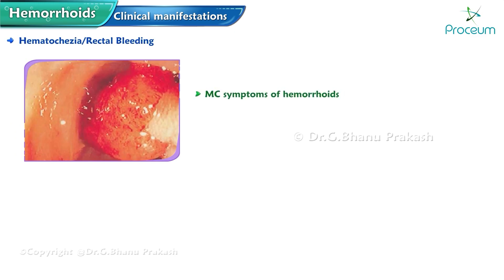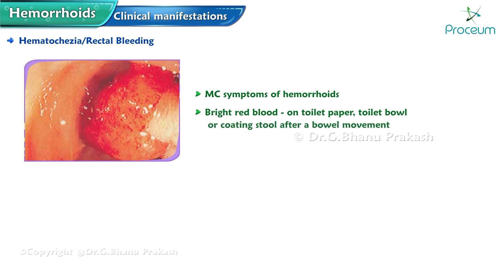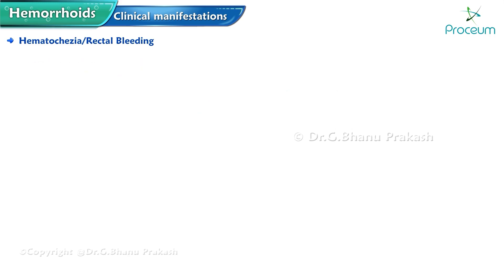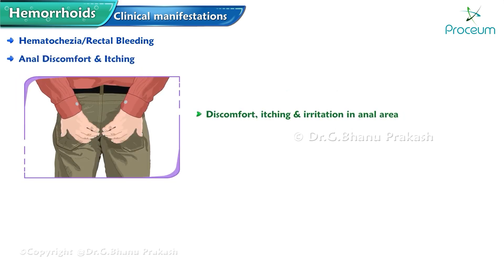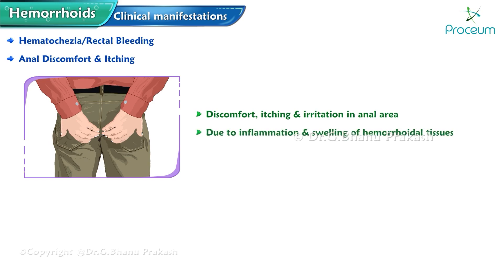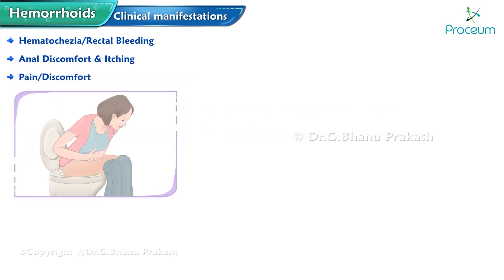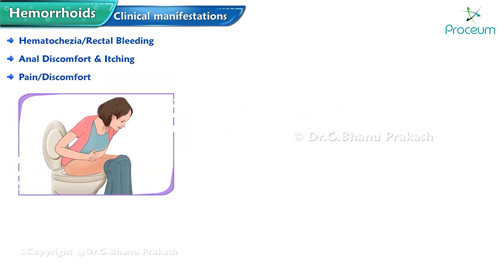Patients with hemorrhoids typically present with rectal bleeding, one of the most common symptoms. Bright red blood may be noticed on toilet paper, in the toilet bowl, or coating the stool after a bowel movement. Hemorrhoids can also cause anal discomfort and itching due to inflammation and swelling of the hemorrhoidal tissues.